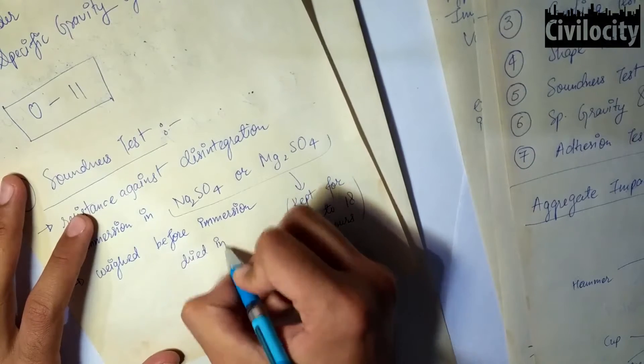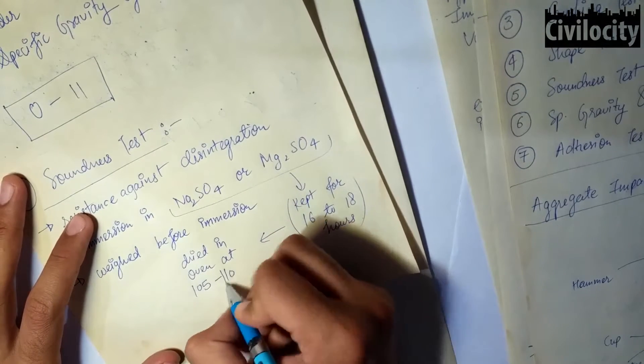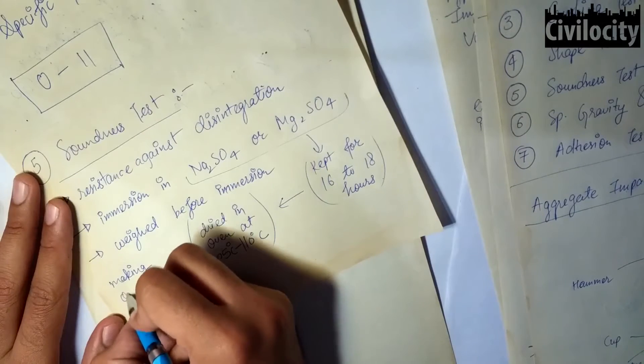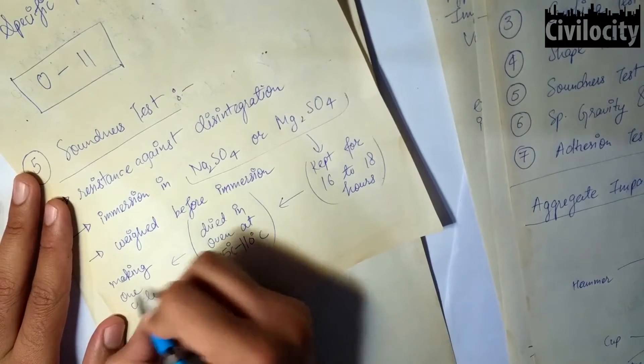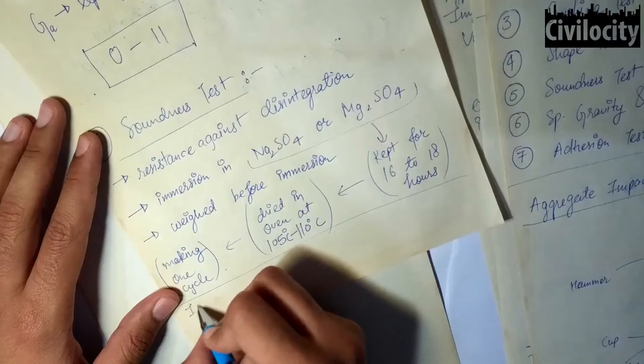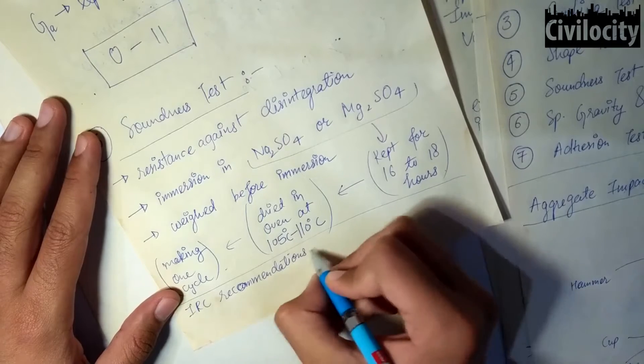After that, these aggregates are oven dried at 105 to 110 degrees Celsius, which makes one cycle. Then these aggregates are examined visually to see if there is any evidence of excessive splitting, crumbling, or disintegration of the grains.